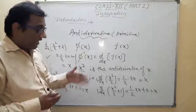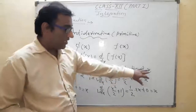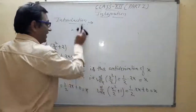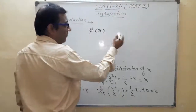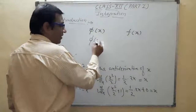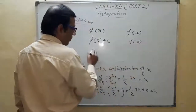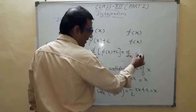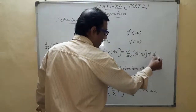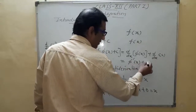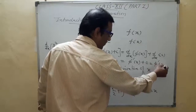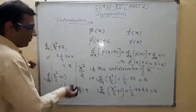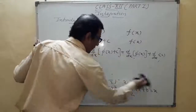This means we can say infinitely many antiderivatives of a function x are available. We can say φ(x) is an antiderivative of f(x), and therefore φ(x) + c is also an antiderivative of f(x). That is, d/dx of (φ(x) + c) = φ'(x) + 0 = φ(x), where c is any constant.